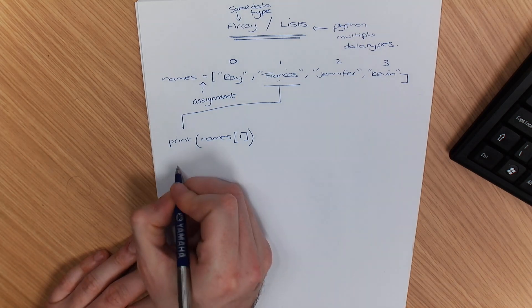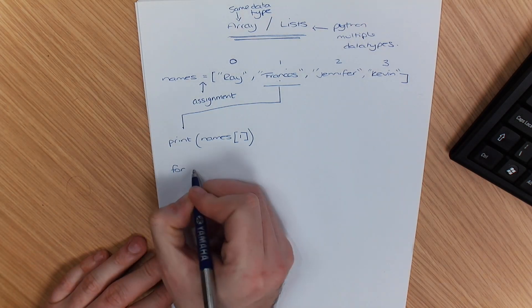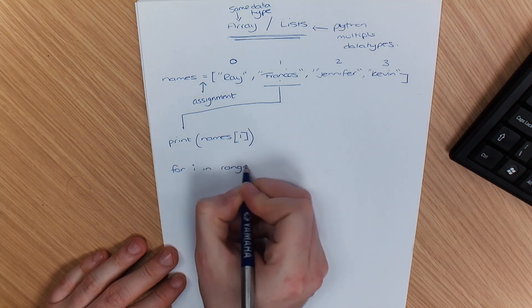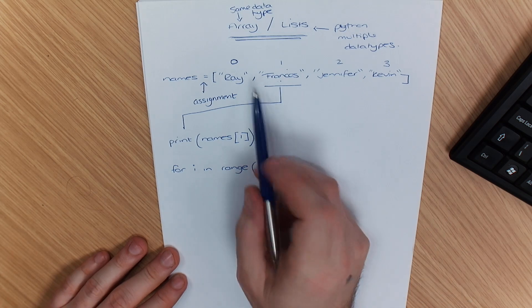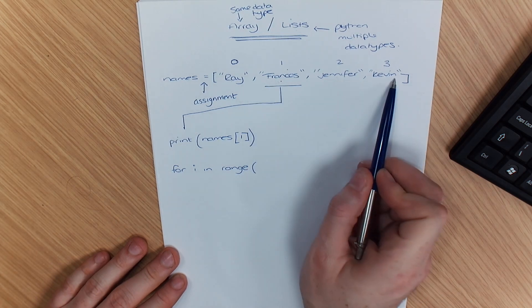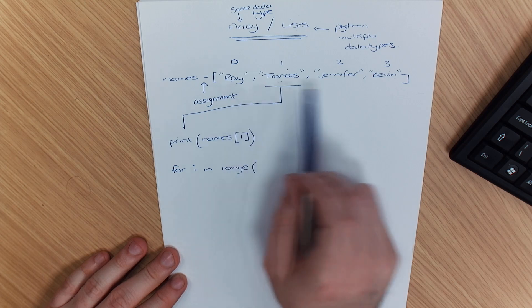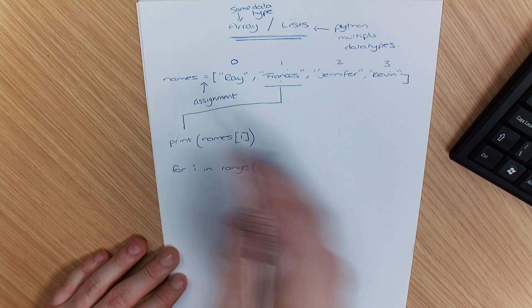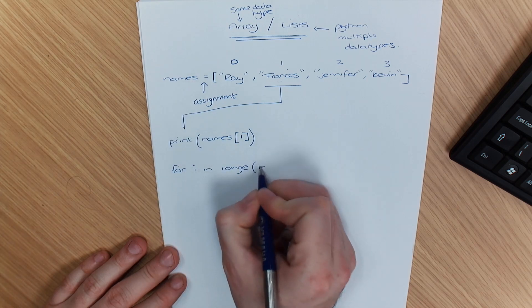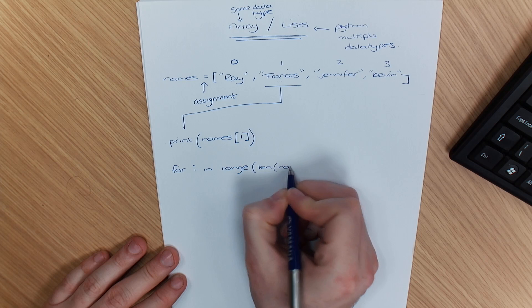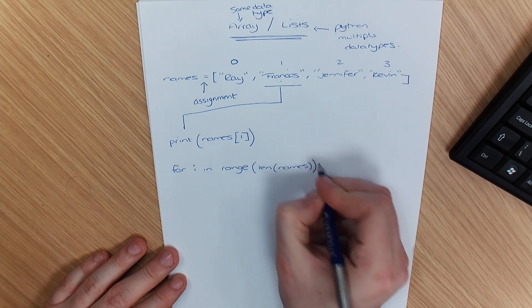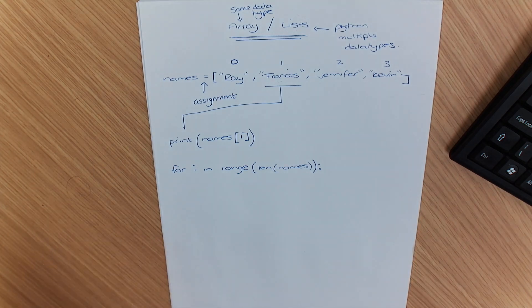If you understand how to iterate through a list on its own, this is going to help you. So watch. I'm going to say, for I in range, and I'm going to get the length of this list. So how do we get the length of the list? It is LEN. So I in range, LEN names. So what I'm going to do there is LEN names.